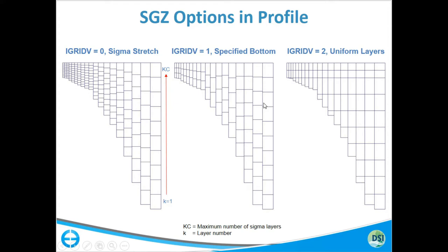What we've done with the Sigma Z version is take somewhat the GBC concept of a variable depth but fixed number of layers for each cell, and just completely redid the computational approach throughout — essentially starting over again — and ended up with the Sigma Z version, which has two sub-options.